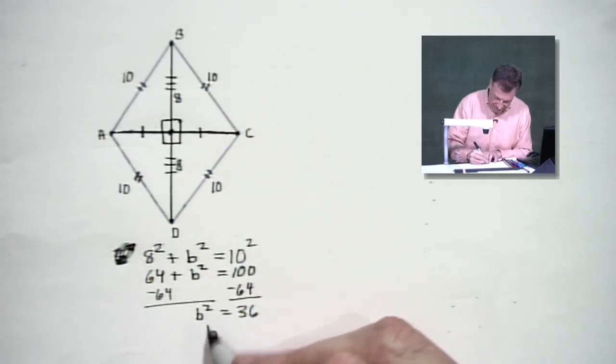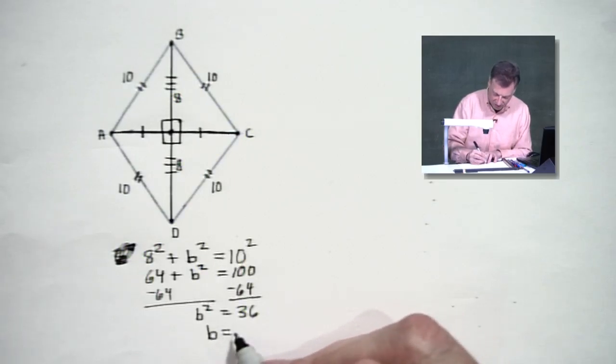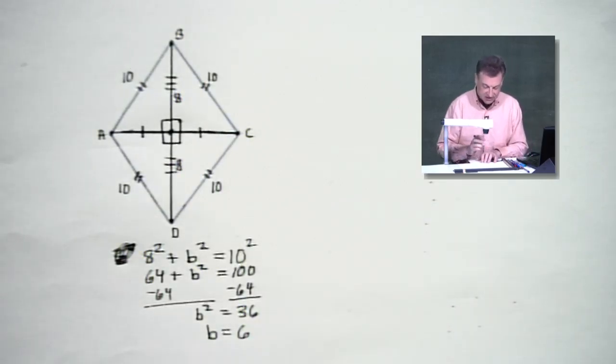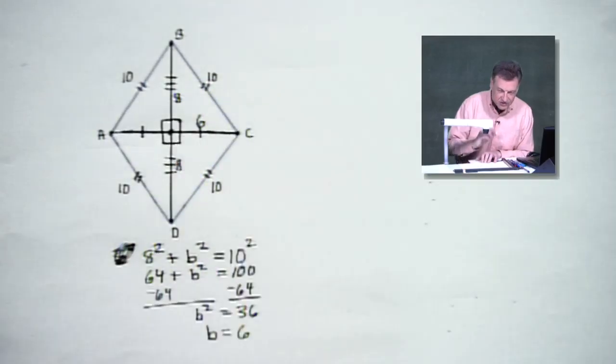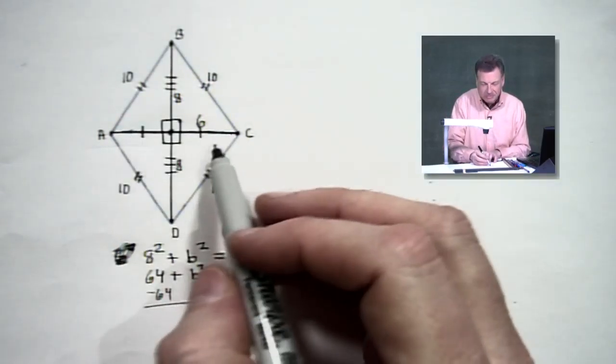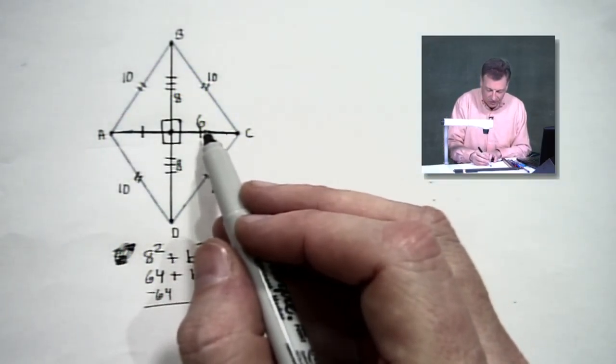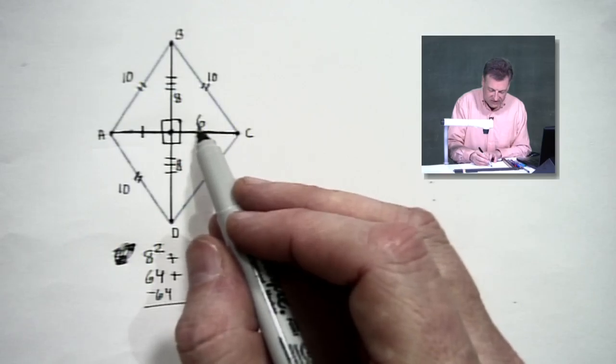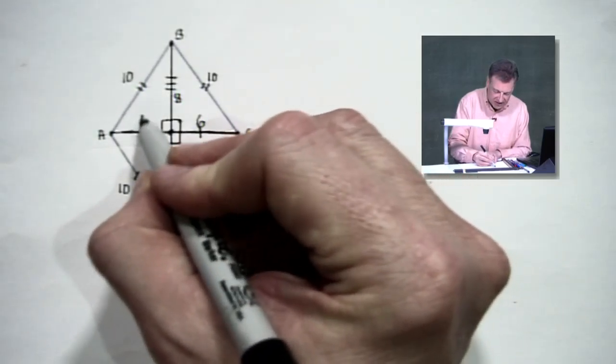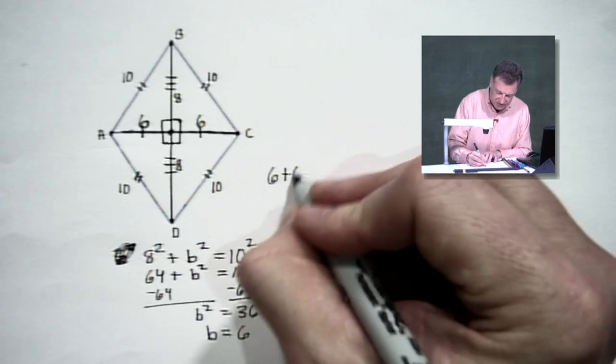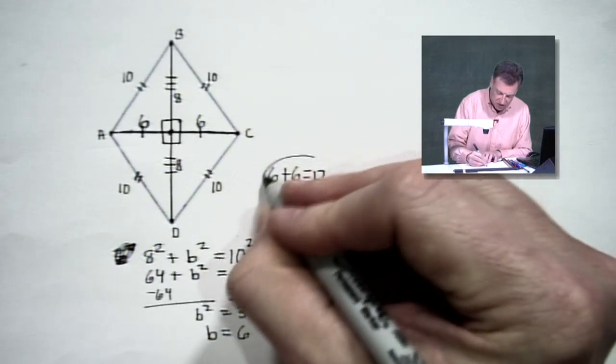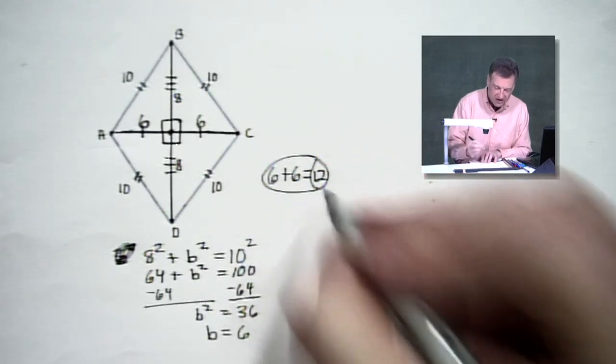That B almost looks like a six, doesn't it? That's why we worry about some of our letters, but be careful with it. It's going to give us six. Now that's not the complete answer - remember I said this diagonal has been split. We're going to have six and six. So what's the length of the diagonal? The diagonal is six plus six, which will give us 12. There is your final answer.